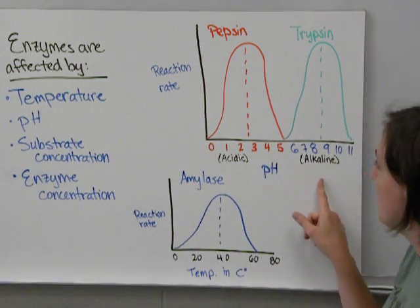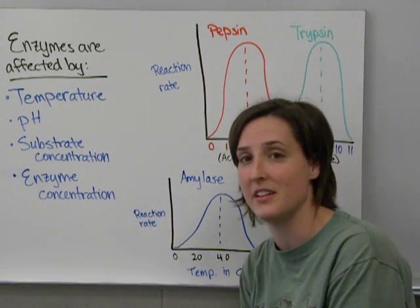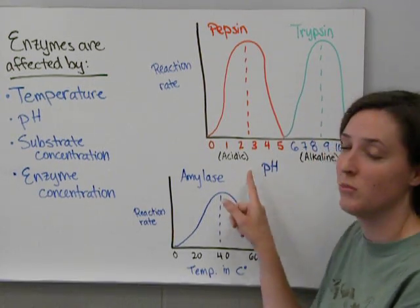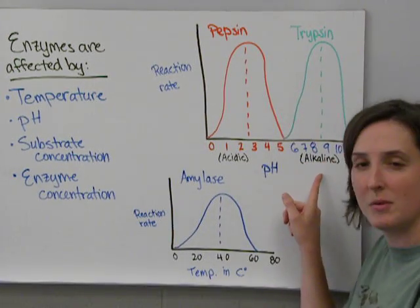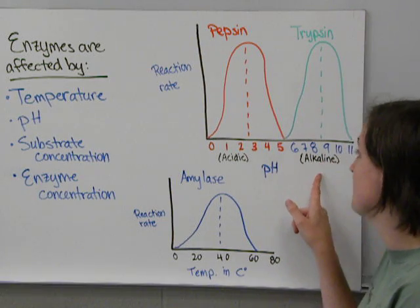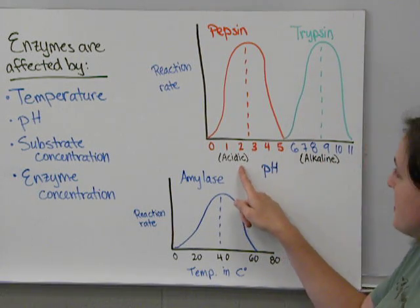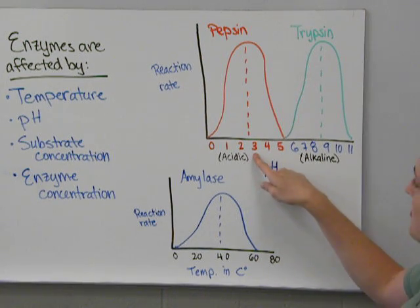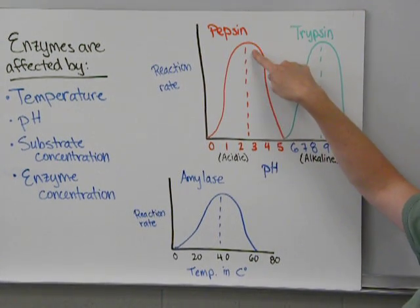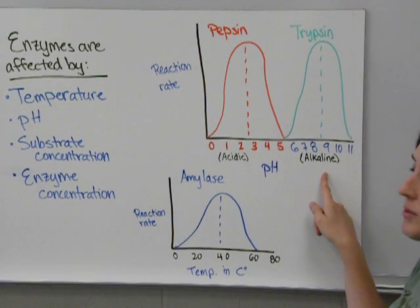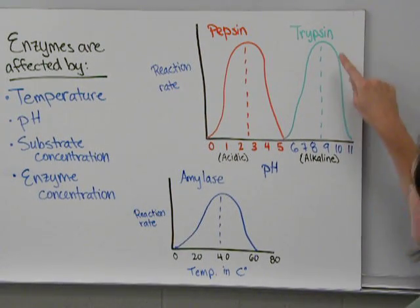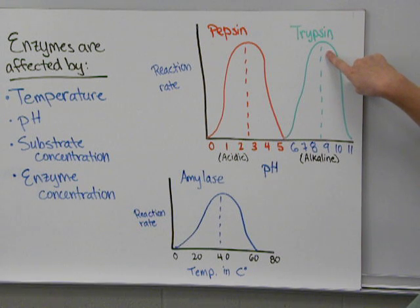On our graph, we have two enzymes used in the digestive system: pepsin, which is found in the stomach, and trypsin, which is found in the small intestine. You'll notice that pepsin reacts best at a pH of around 2 or 3. Trypsin needs to work at a less acidic level — its optimal functioning is around pH 8.